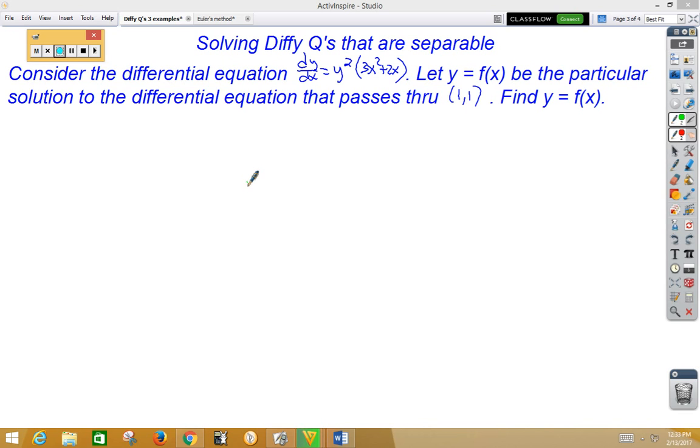We need to start by getting that y over to the left, so we're going to divide it over. This gives us 1/y² dy equal to, and then multiply the dx to the other side, so we get (3x² + 2x) dx.